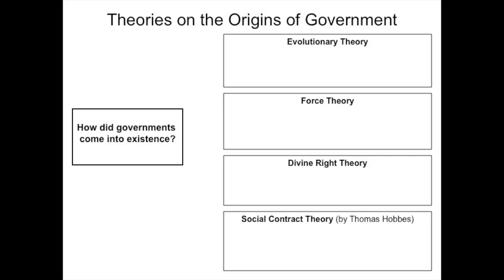So how do governments actually come to exist? For origins, there's the evolutionary theory, the force theory, divine right theory, and social contract theory, which we'll talk about when we look at Hobbes as well.